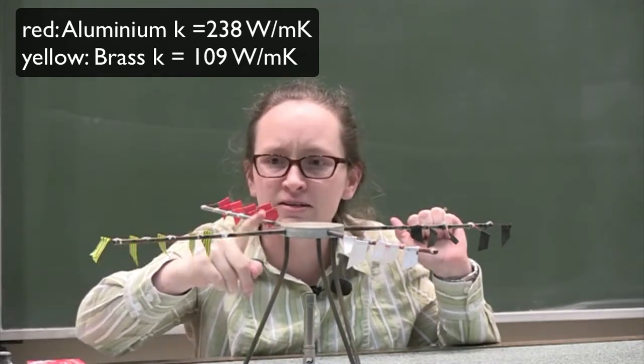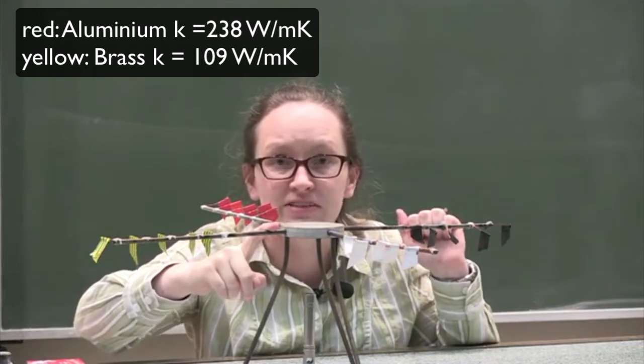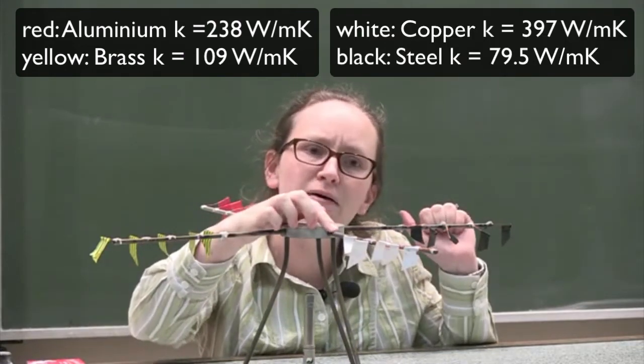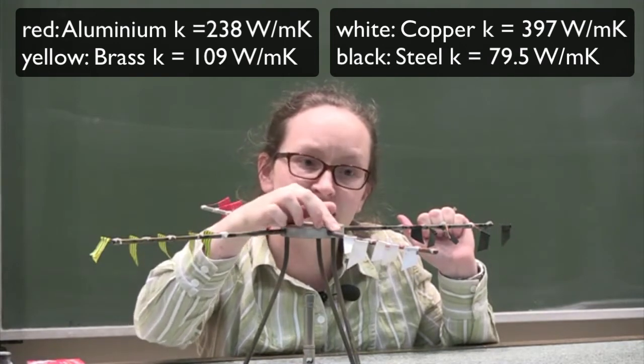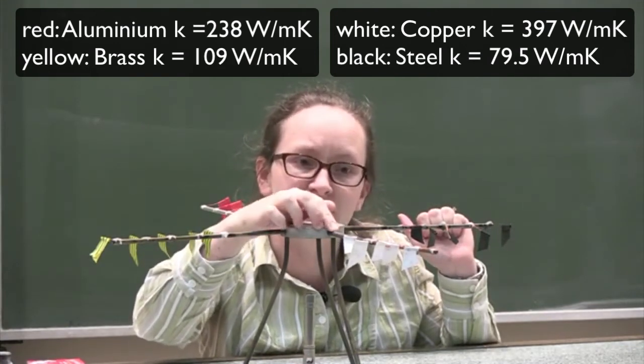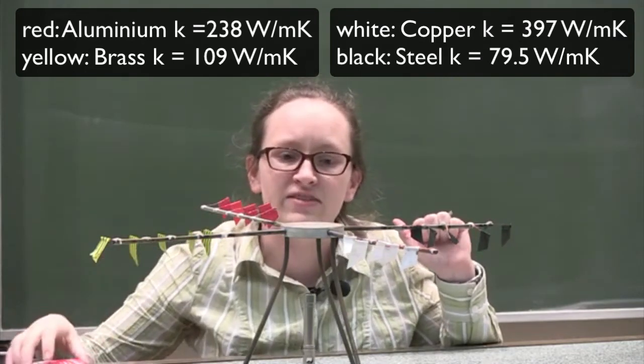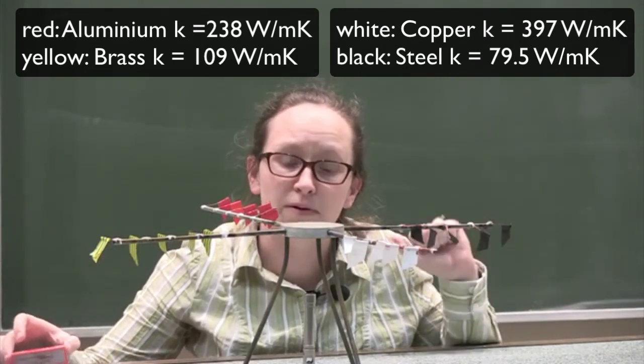Here we have brass with a thermal conductivity of 109 watts per meter per Kelvin. Here we've got copper with a thermal conductivity of 397 watts per meter per Kelvin. And here's stainless steel with a thermal conductivity of 79.5 watts per meter per Kelvin.